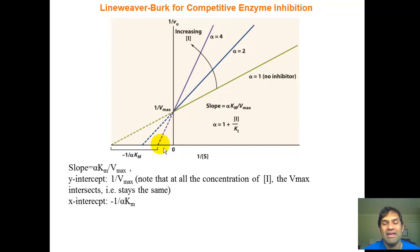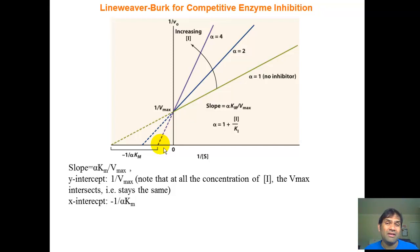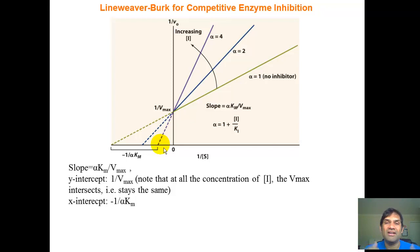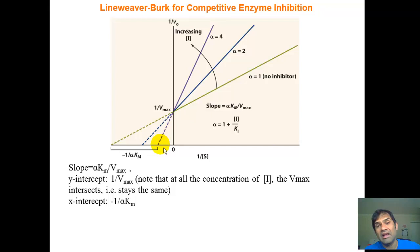The reason the apparent Vmax stays the same is brute force: increasing substrate concentration outcompetes and dilutes out the inhibitor. More substrate overwhelms the system, so by probability alone, the substrate binds the active site instead of the inhibitor, allowing Vmax to be achieved. The apparent Km goes up because it takes significantly more substrate concentration to achieve Vmax over 2.